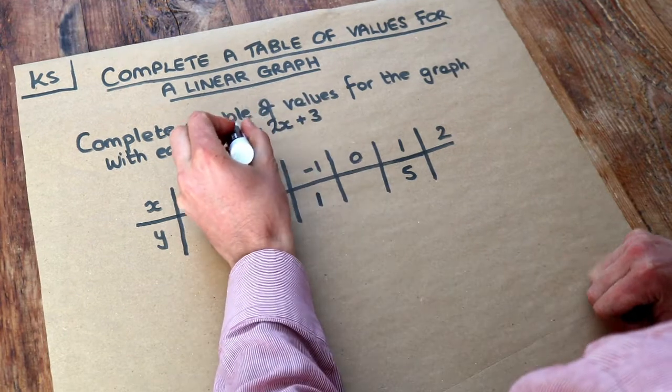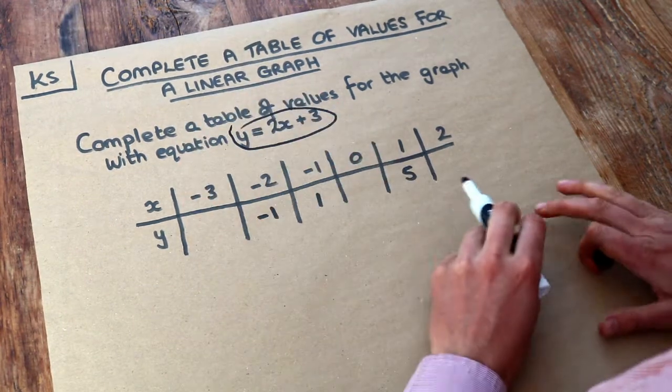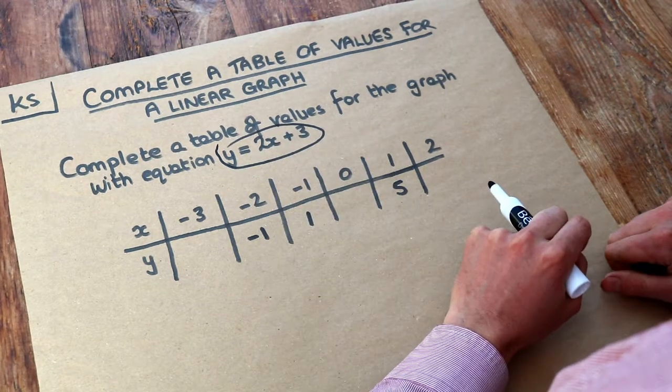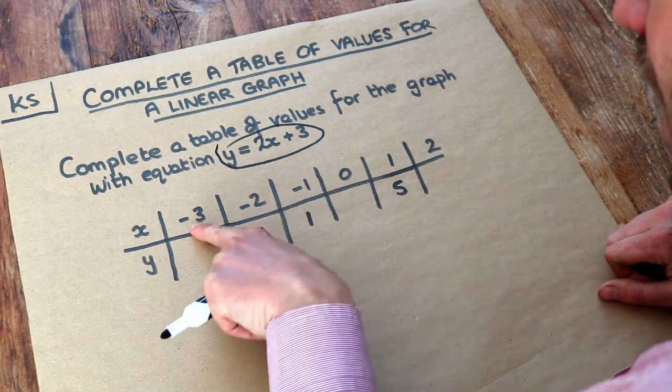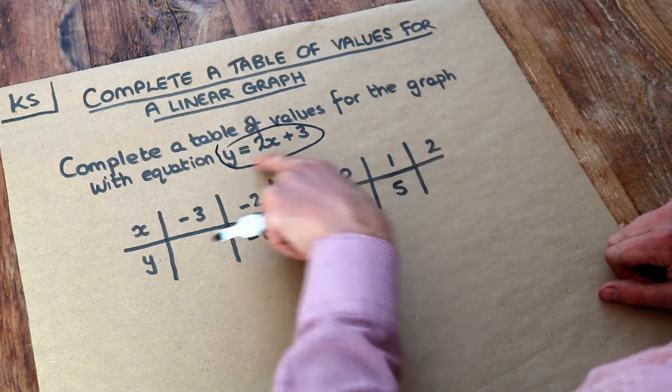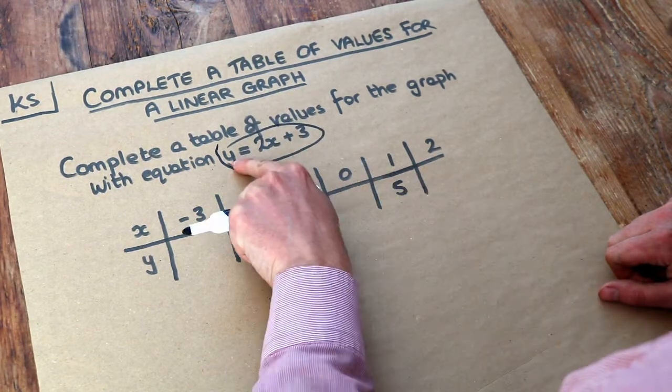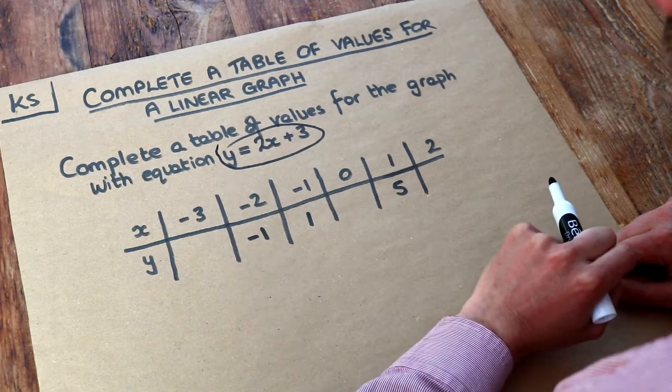We're going to use this equation as a rule for telling us how to work out the y value based on the x value. Basically, all we need to do is take each of these values of x and substitute it into this equation. That allows us to work out what y would be for particular values of x.